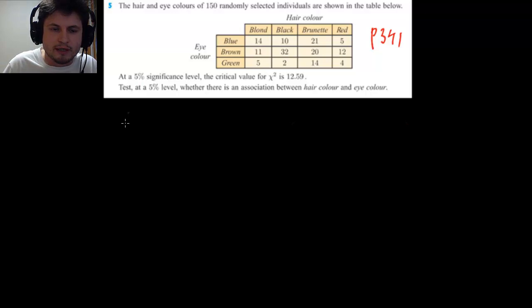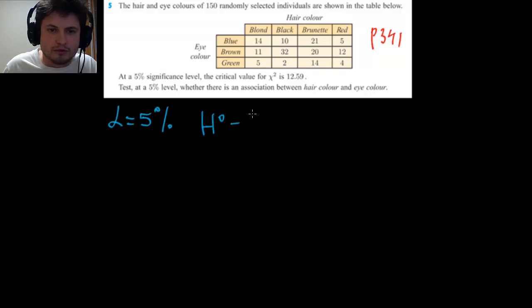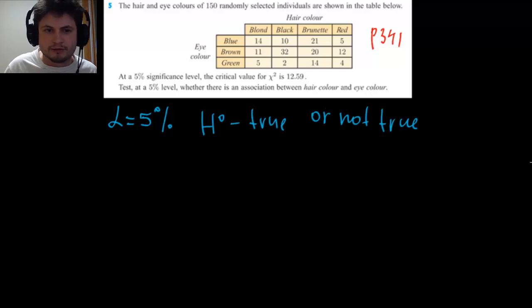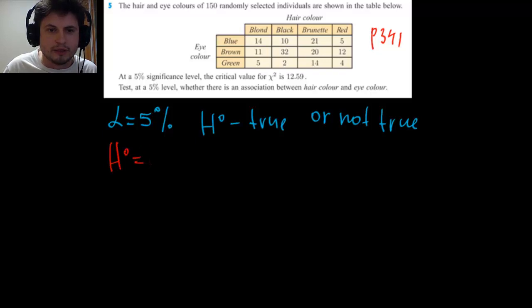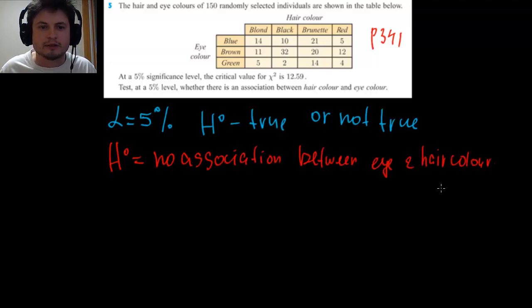It asks you to find at alpha of 5% whether your null hypothesis is true or not. So we're going to rewrite this in statistical terms. Our null hypothesis is that there is no association, no relation between eye and hair color.